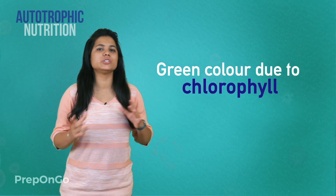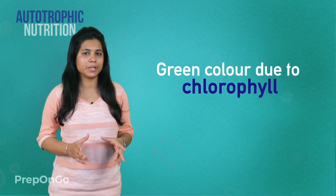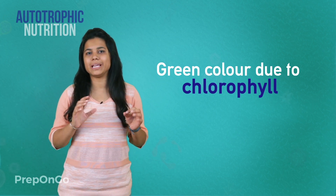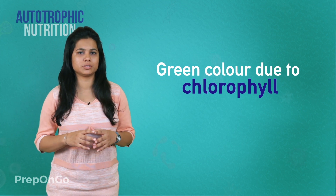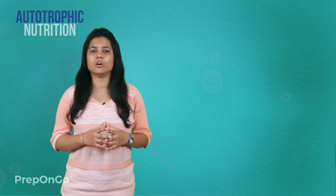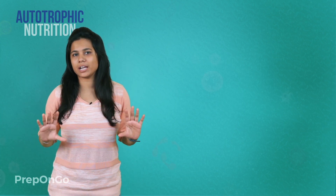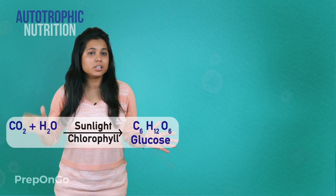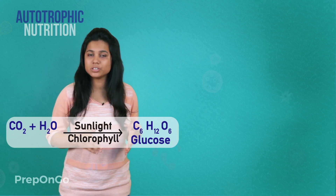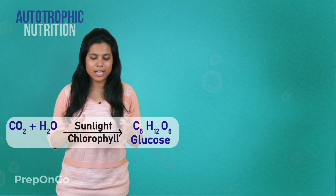The green color is due to the chlorophyll pigment present in the plants. Chlorophyll plays an important role in the photosynthesis process. Now you must be thinking, what is the chemical energy we are talking about? We can understand this by a simple chemical equation. Carbon dioxide reacts with water in the presence of sunlight and chlorophyll.